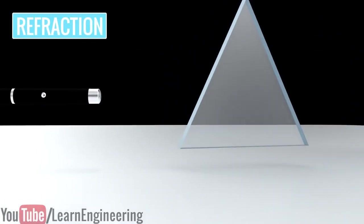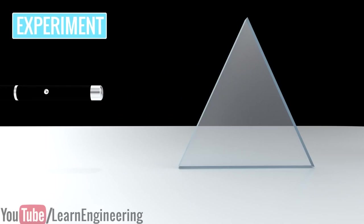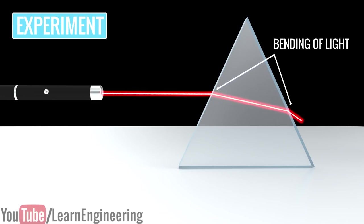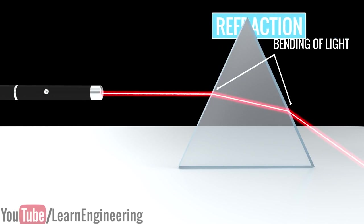To understand what it is, let us carry out an interesting experiment. In this experiment, light passes through a prism. You can see that at the interface, the light gets bent instead of going straight. This phenomenon is known as refraction.